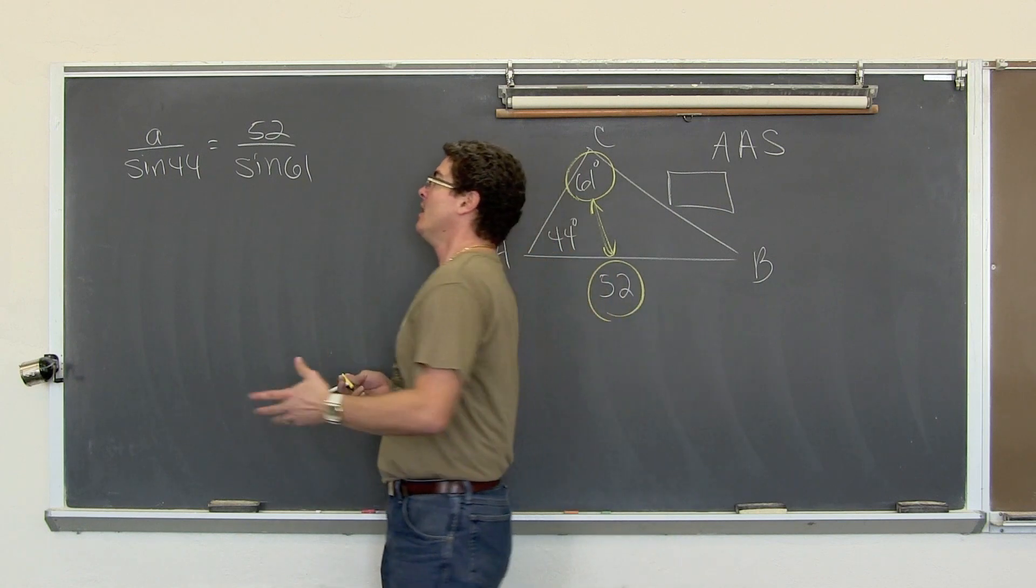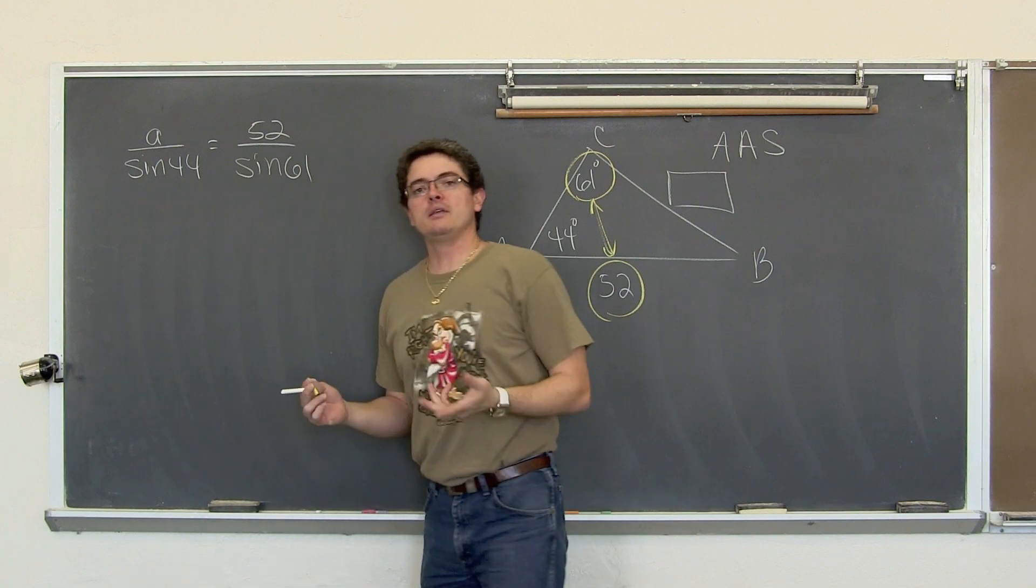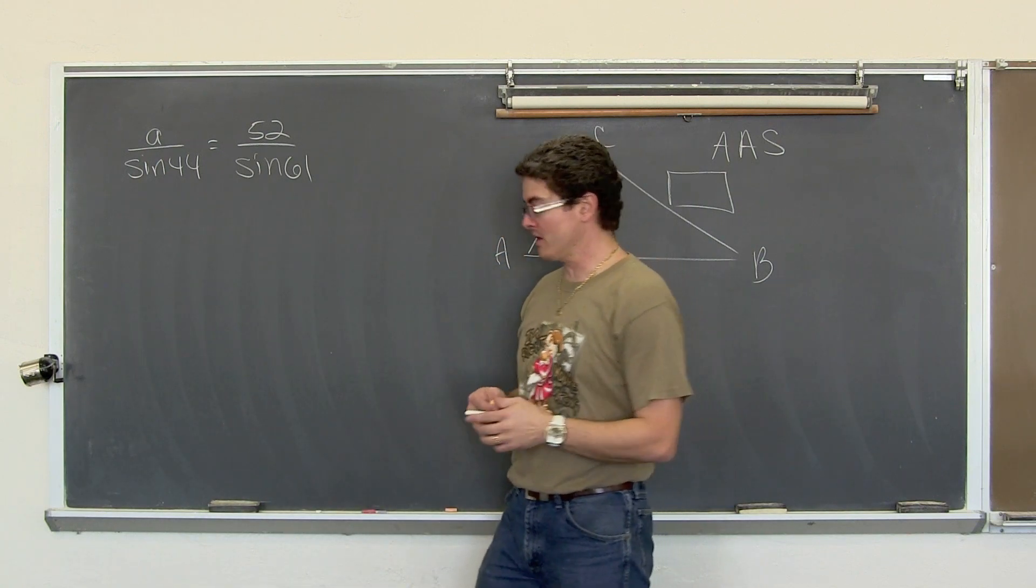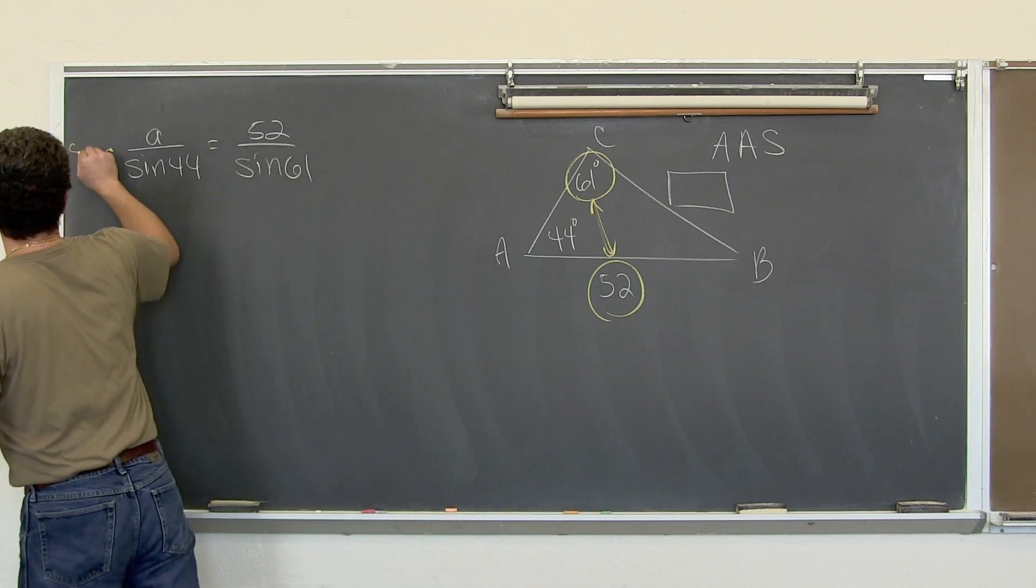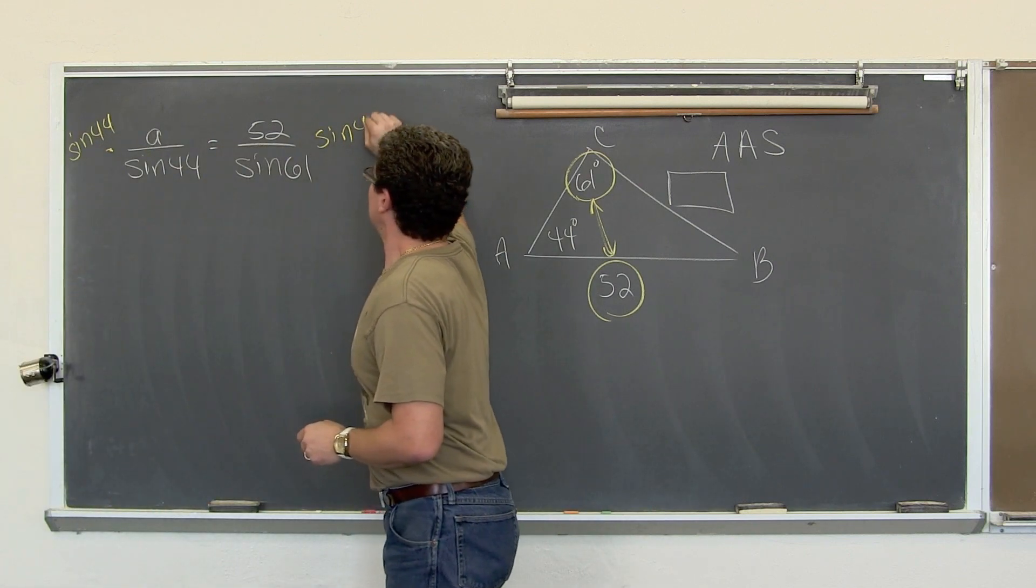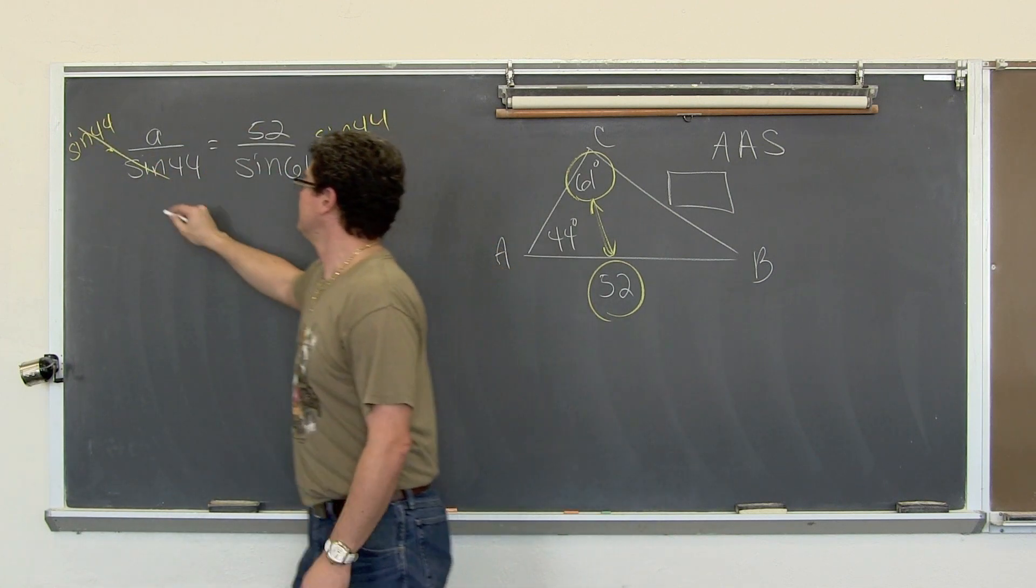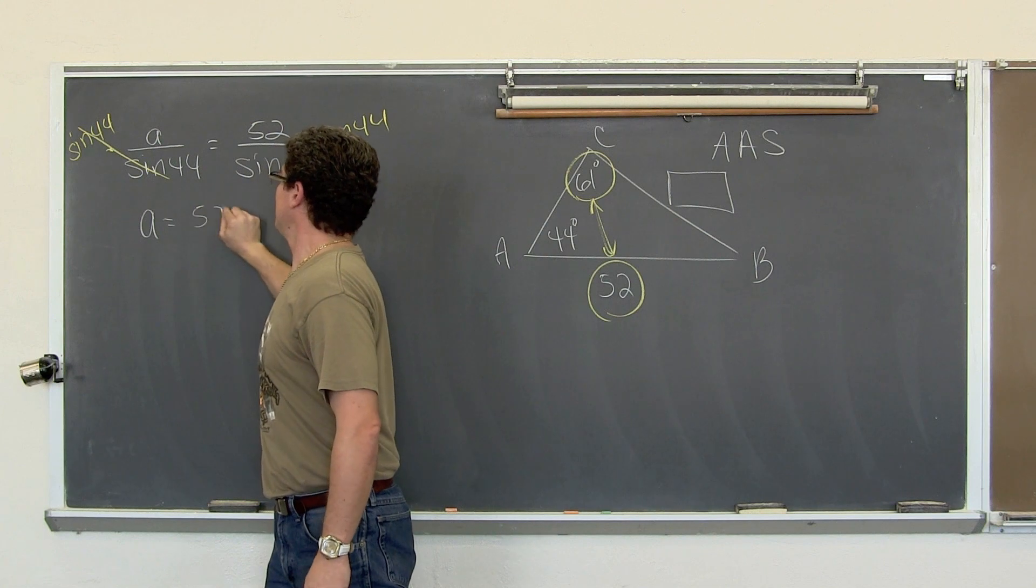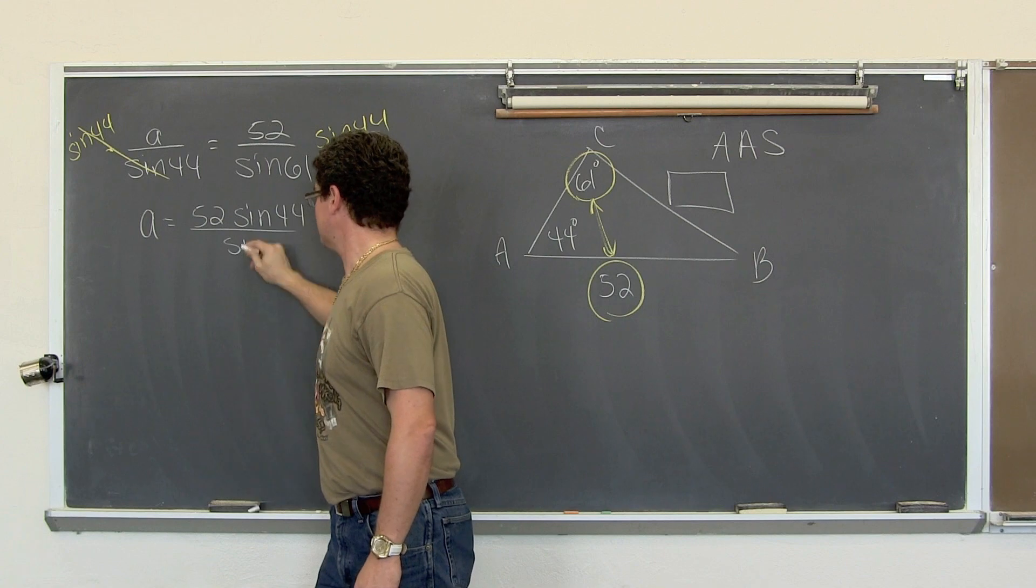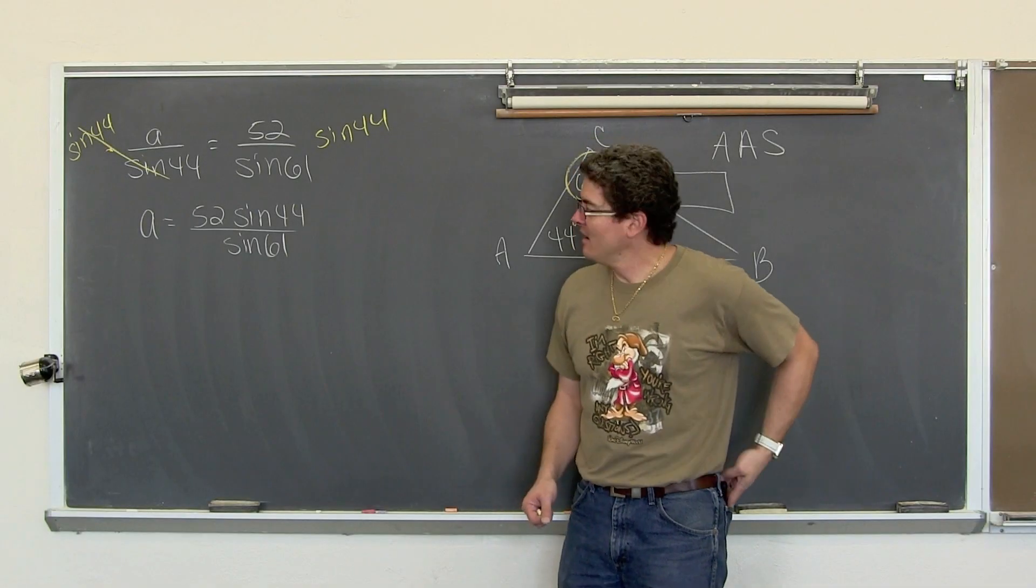If you don't have this opposite pairing, then the oblique triangle is going to need to be solved using the law of cosine. However, we do. So we have a divided by sine of 44 equals 52 over the sine of 61.